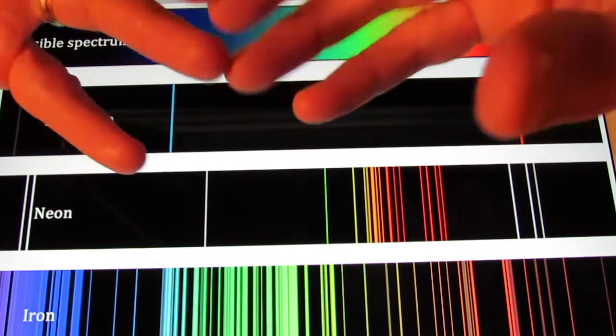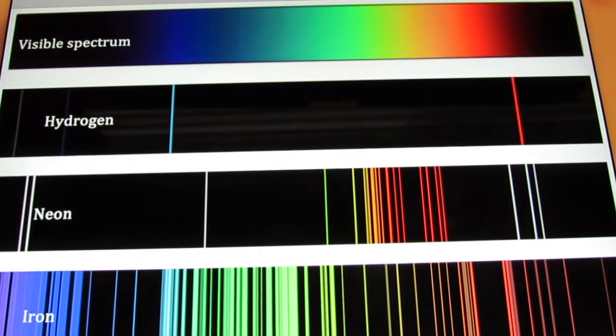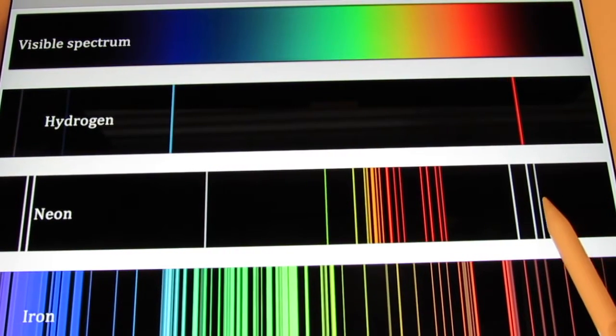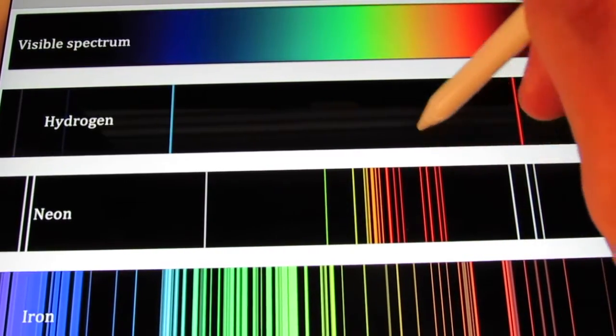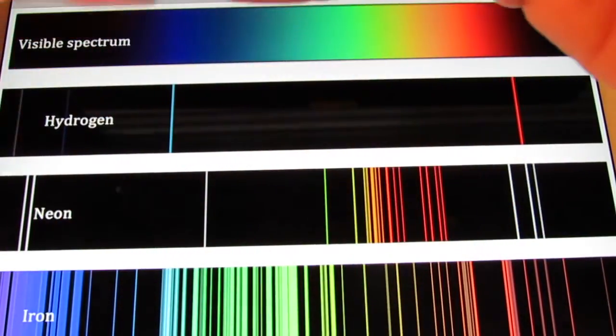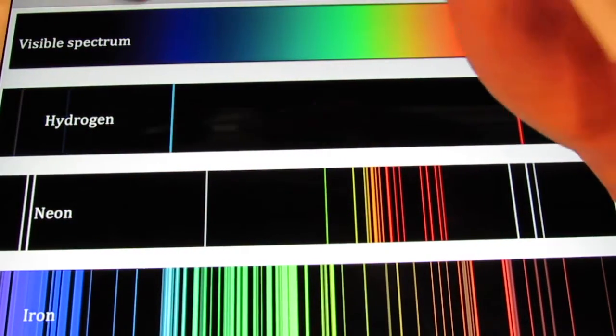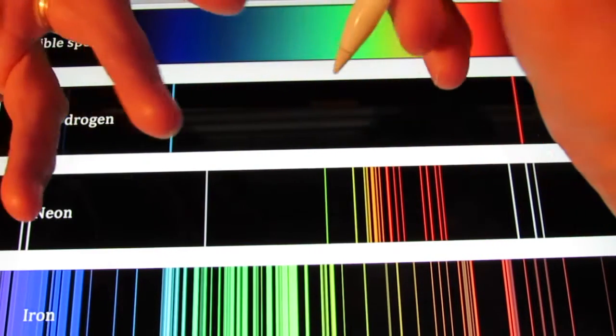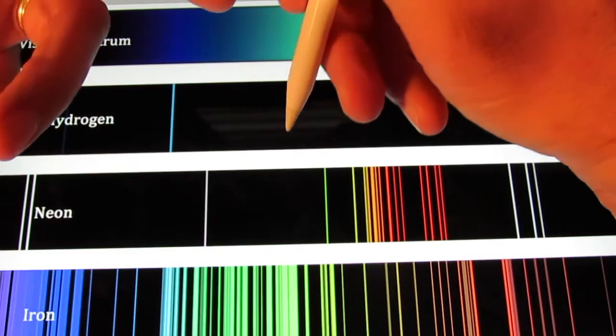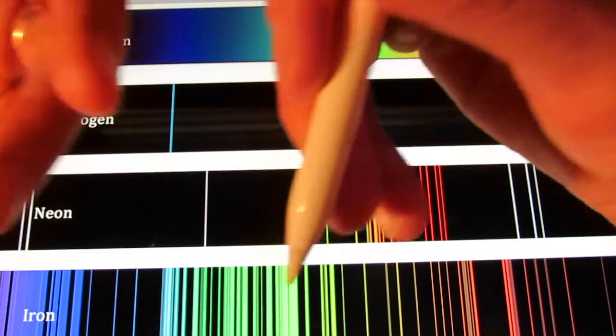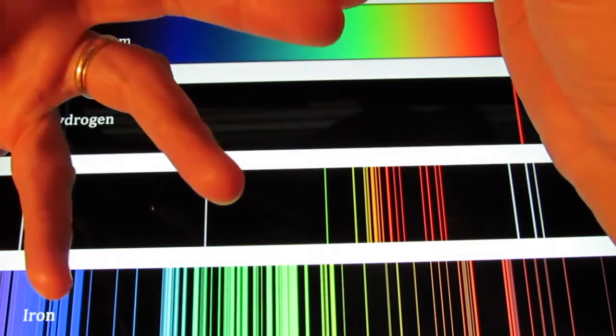Those are the lines that I see when I pass hydrogen light through a diffraction gradient. It turns out that every element has its own unique spectrum. So if I were to do the same thing with neon, do you see how neon spectrum is different than hydrogens? And irons is different than neons and hydrogens. And so on and so on. Every element has its unique spectrum. Now Bohr decided to work with hydrogen. You have to understand why. If Bohr is trying to understand the behavior of electrons, the obvious choice of an element to study would be hydrogen.